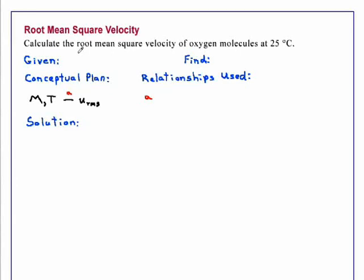Root mean square velocity. Calculate the root mean square velocity of oxygen molecules at 25 degrees Celsius.